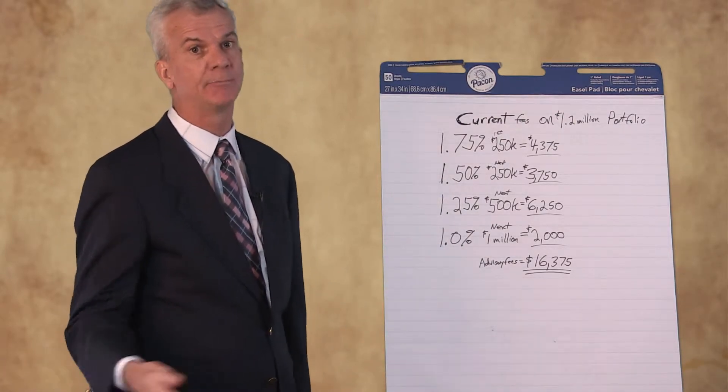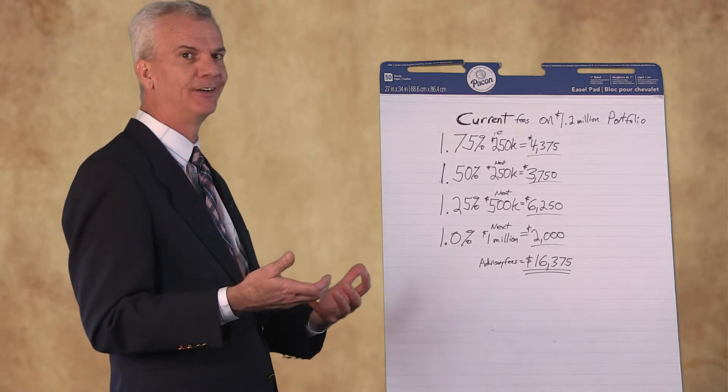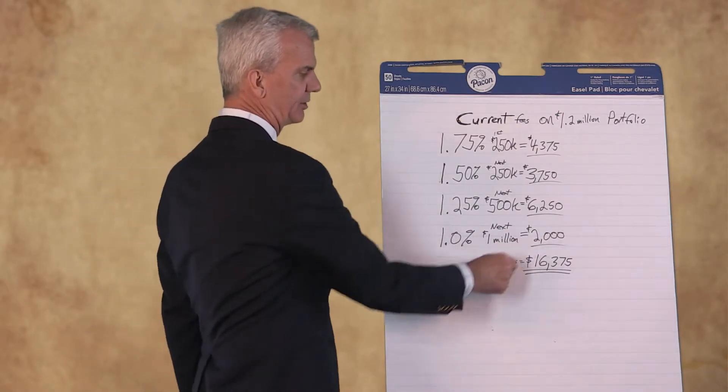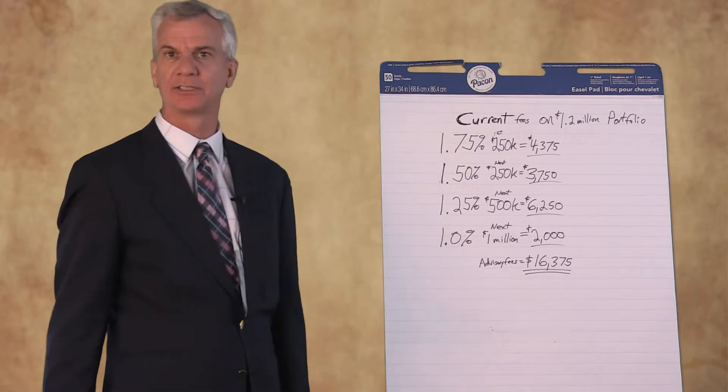So yes, it was at 1 percent, but that was just on the last $200,000. That's $2,000. So the total is $16,375.